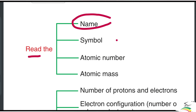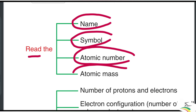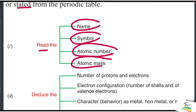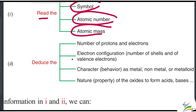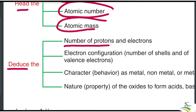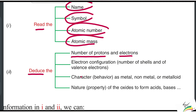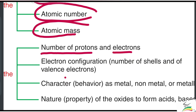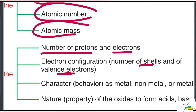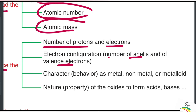From the periodic table, we can deduce several pieces of information about an element: its symbol, atomic number, atomic mass, and the number of protons and electrons.